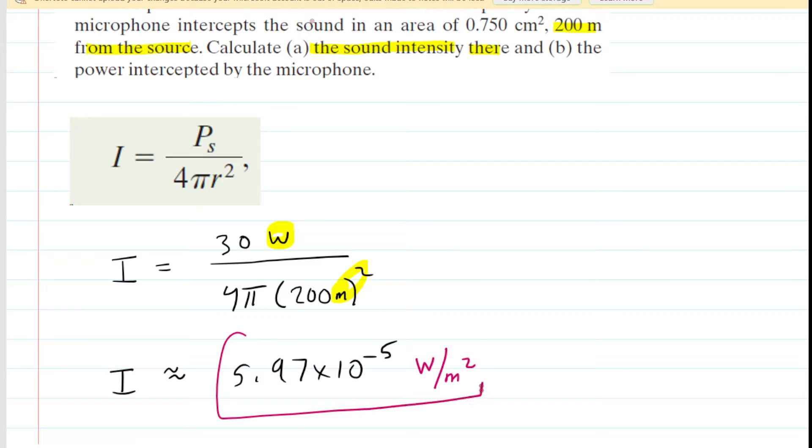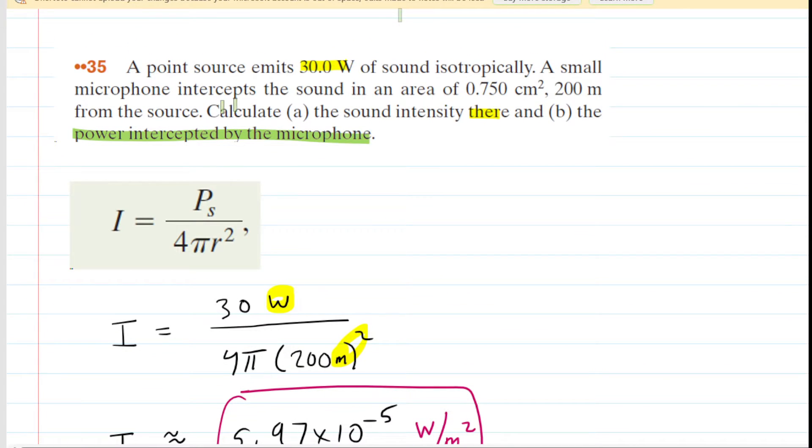This is the correct answer to part A of the question, and in part B, we are told that there is a microphone that's placed there. We need to figure out the power intercepted by the microphone. Now, importantly, the microphone intercepts the sound in an area of 0.75 centimeters squared.